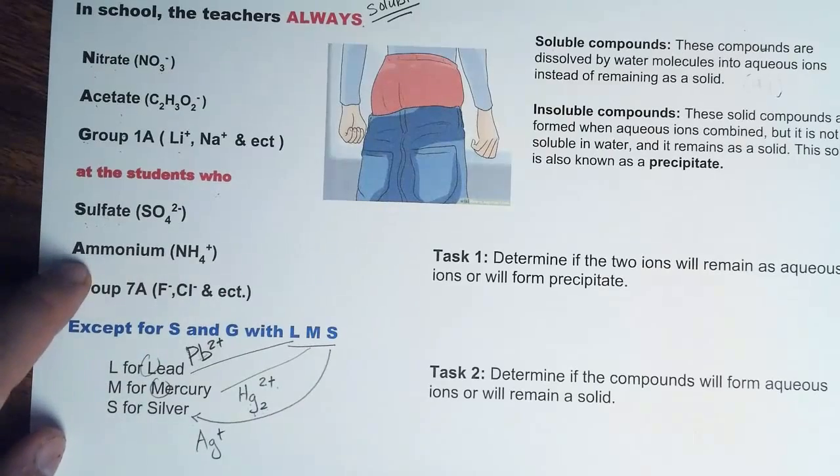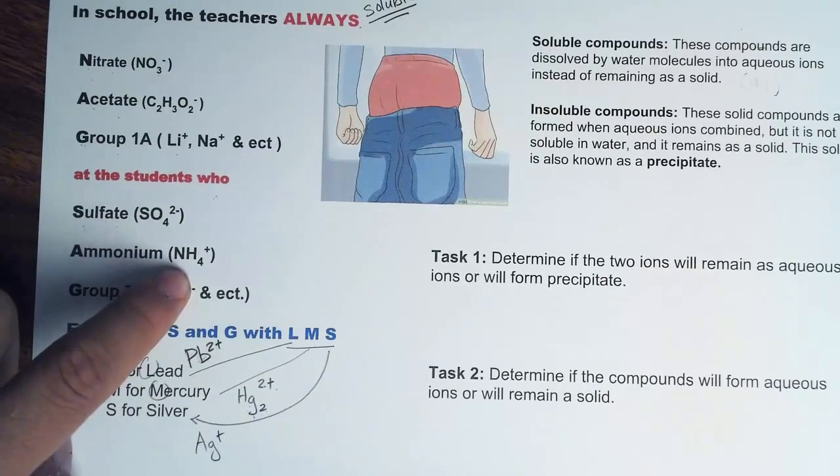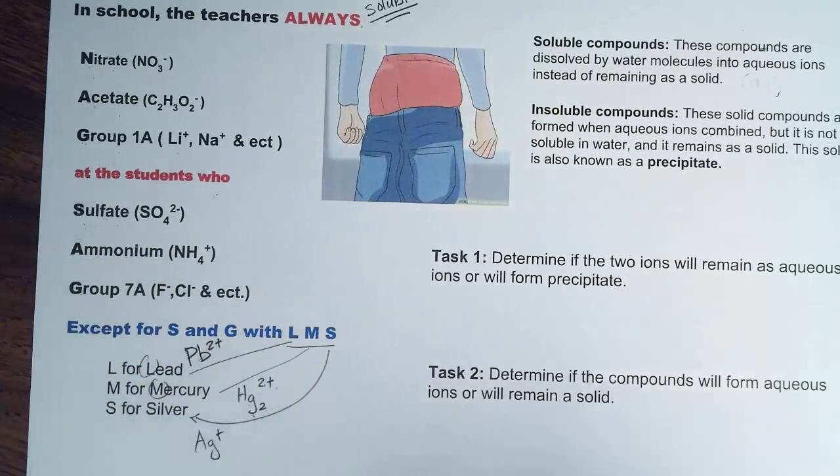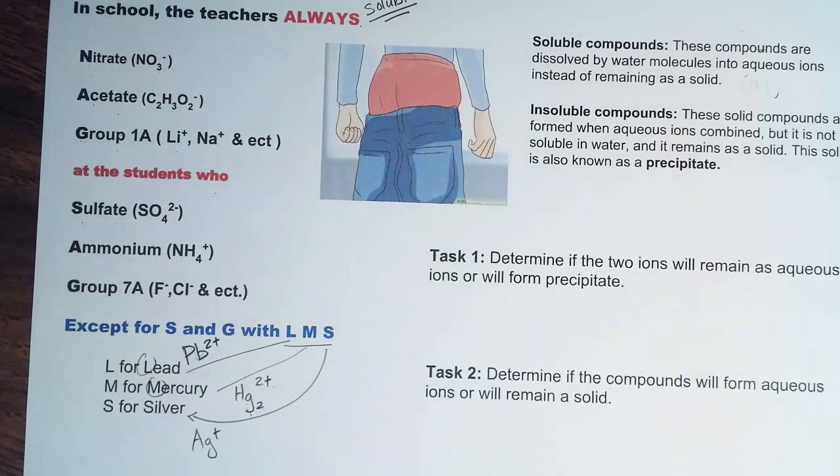A in SAG is for ammonium. Any compound with ammonium will always be soluble.